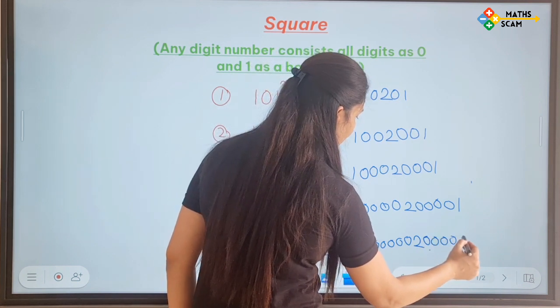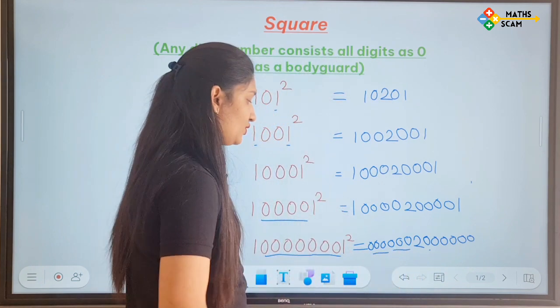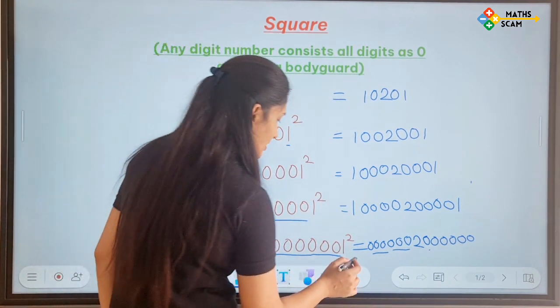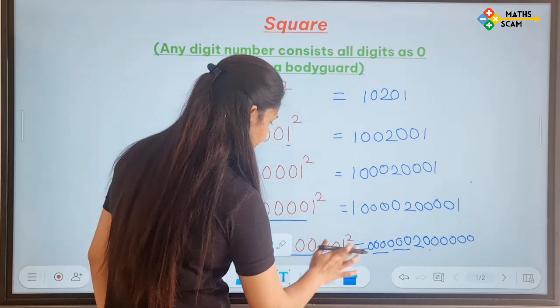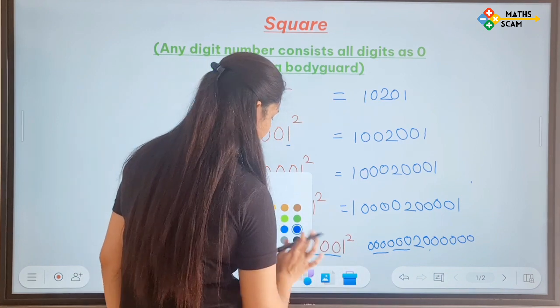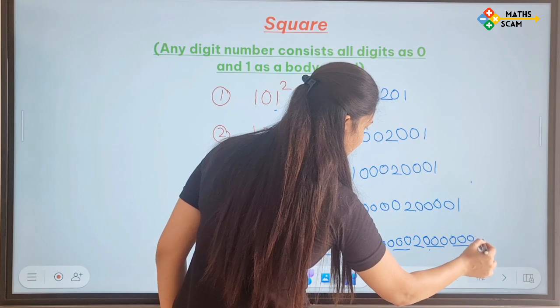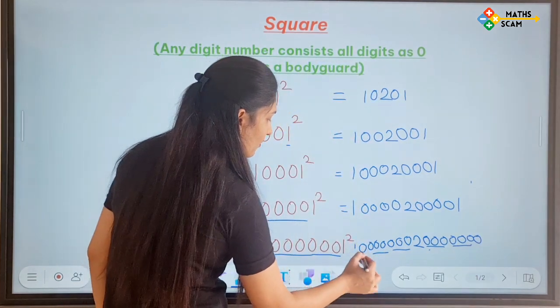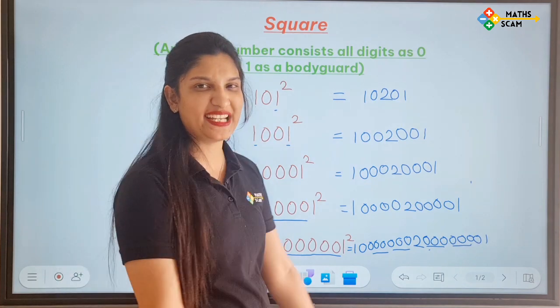1 2 3 4 5 6. Oh I wrote only 6 0's. You have to write down 7 0's. So I will put 1 0 here. And these are also 7 0's. And the first and last digit has a bodyguard.